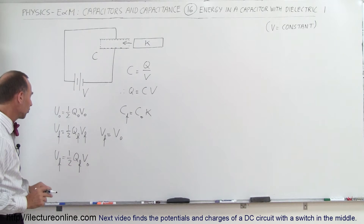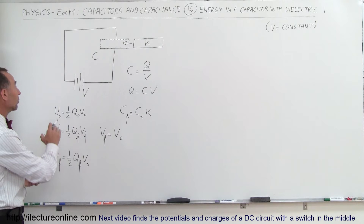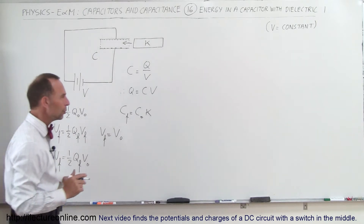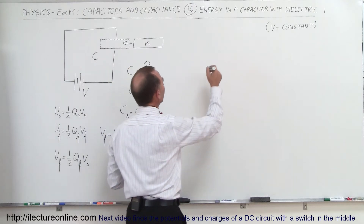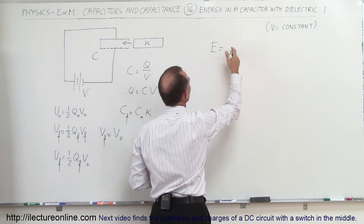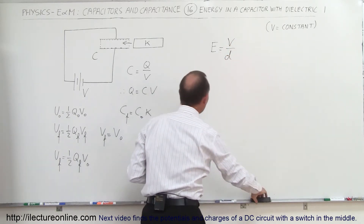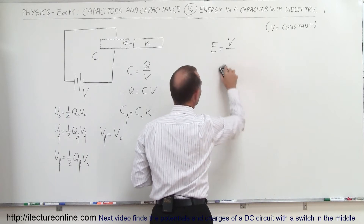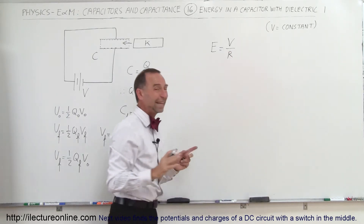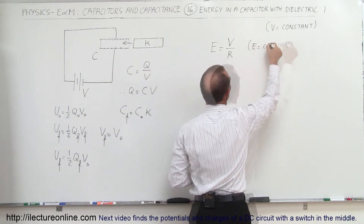Only the charge on the capacitor will change. So let's figure out how to determine what the final charge will be. To do that, we go to the concept that the electric field strength equals the potential difference divided by the distance between the plates — let's use variable R, so E equals V over R. That applies when the electric field is constant.